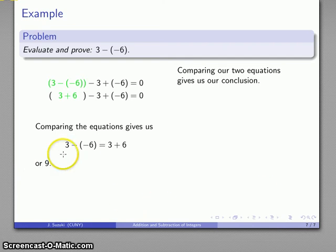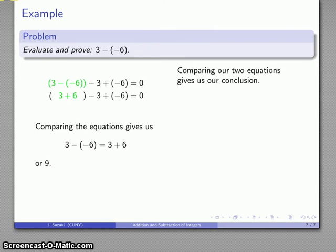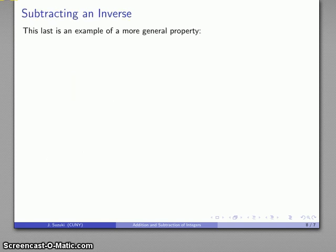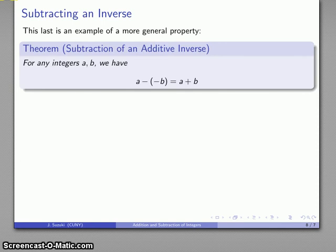Two things have happened here: we have actually evaluated 3 minus negative 6, plus we've also proven that the evaluation is correct. The proof is this entire work here — everything must be included as part of the proof. Otherwise, you don't have a proof; you have a bald assertion of a fact that may or may not be true. This last is another example of a more general property that we can ultimately rely on: if I have two integers a and b, then a minus negative b is the same as a plus b.